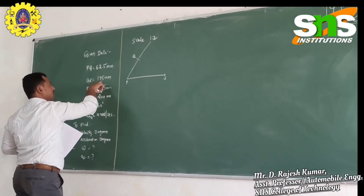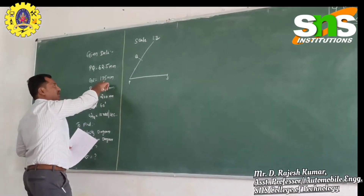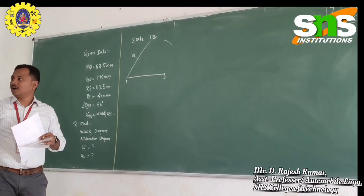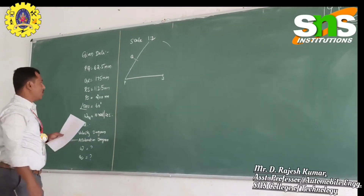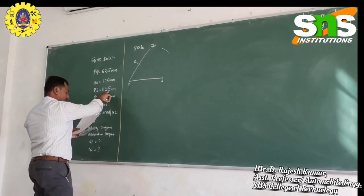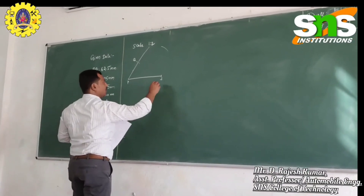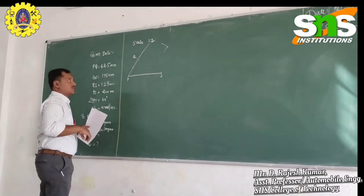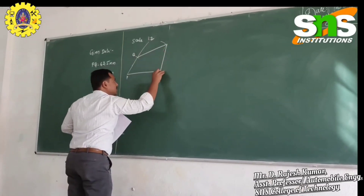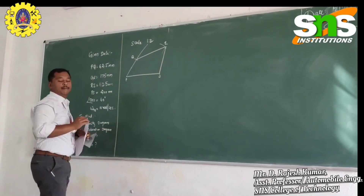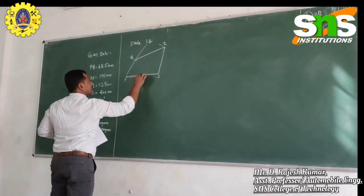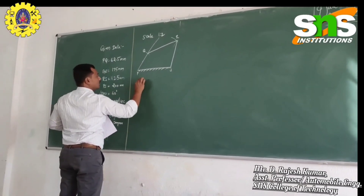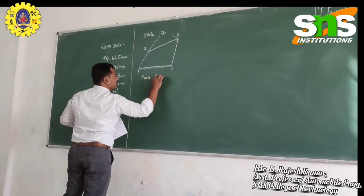From Q to R is 175 mm; at scale that is 8.75 cm. So from Q, I am marking R at 8.75 cm. From R to S it is 112.5 mm, which is 56.25 mm at scale, that is 5.62 cm. So I am marking R at 5.62 cm from S. Now I am linking all the intersection points and this is the completed 4-bar mechanism space diagram.